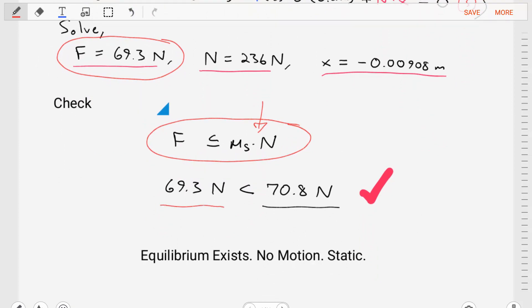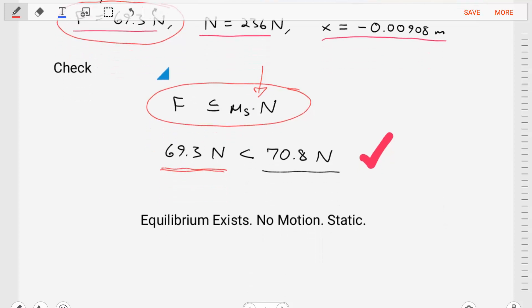We do have a case of equilibrium because the force that we found is 69.3 newtons. It is less than the resistance to sliding, which is 70.8 newtons. So in this problem, equilibrium exists. There is no motion. And this is a static problem.